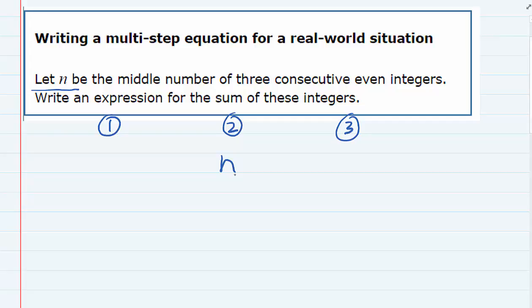Now since they are consecutive even integers, if the one in the middle is n, the next one would have to be two more than that.